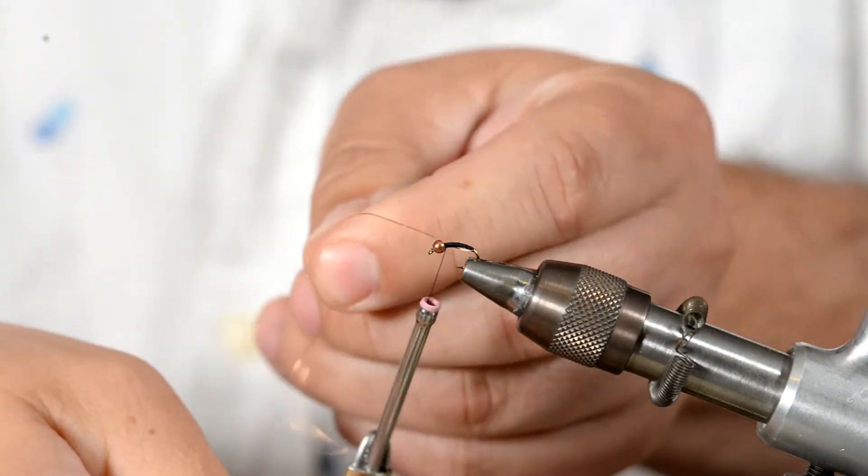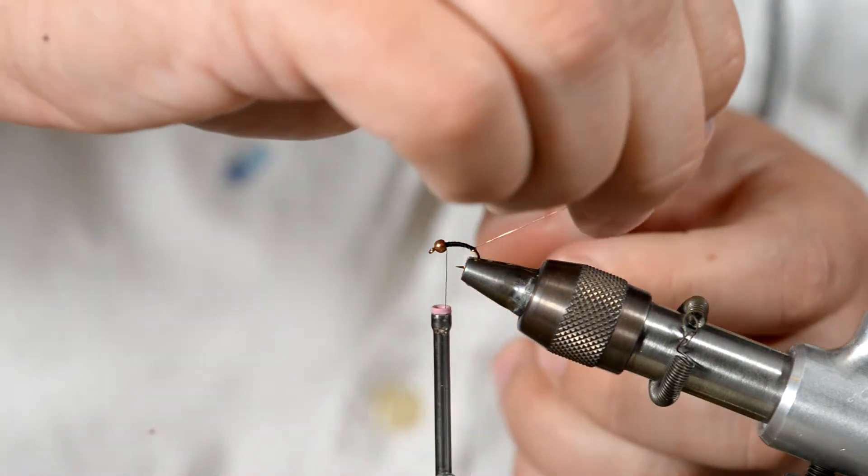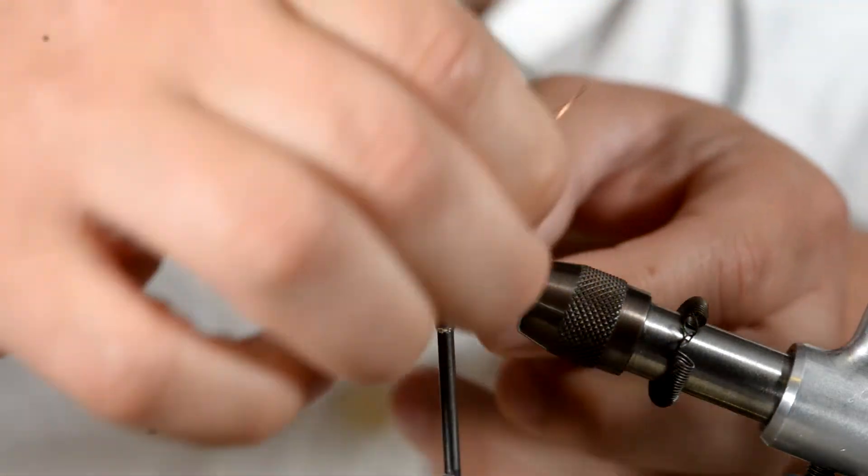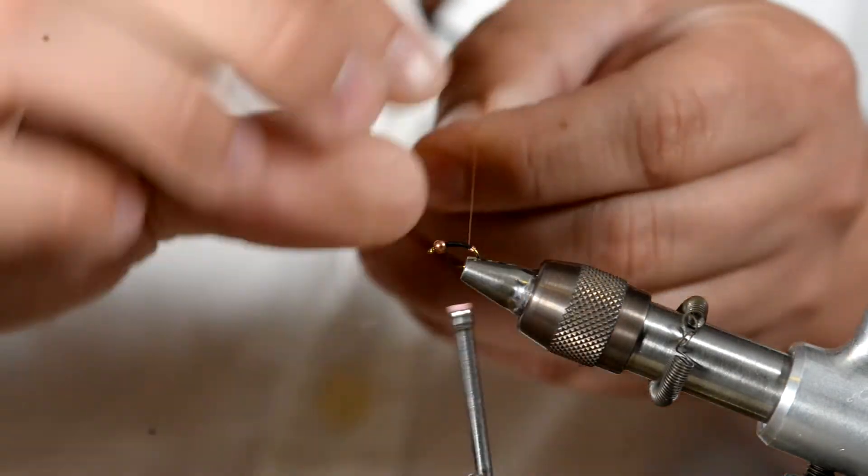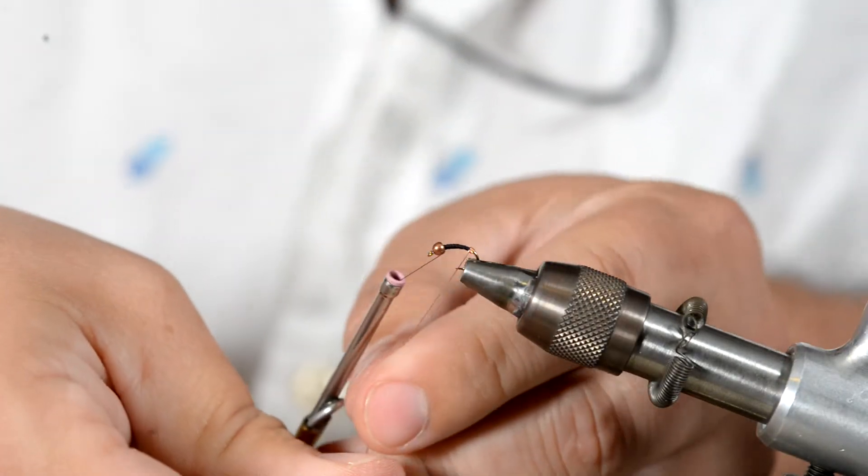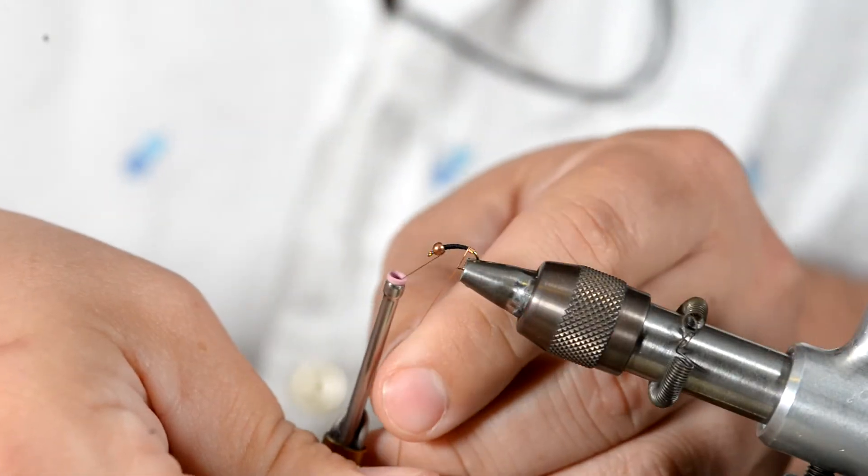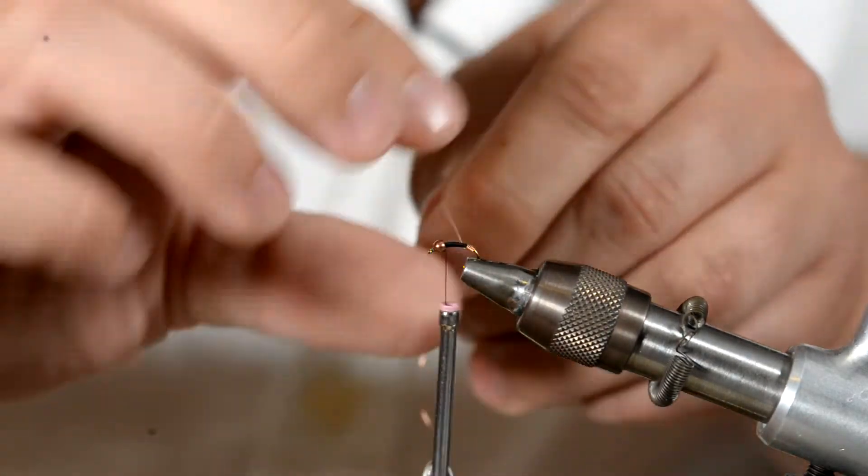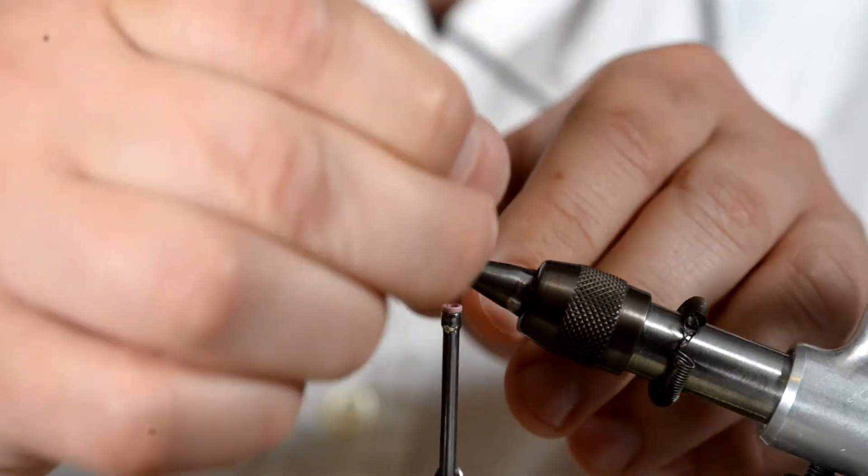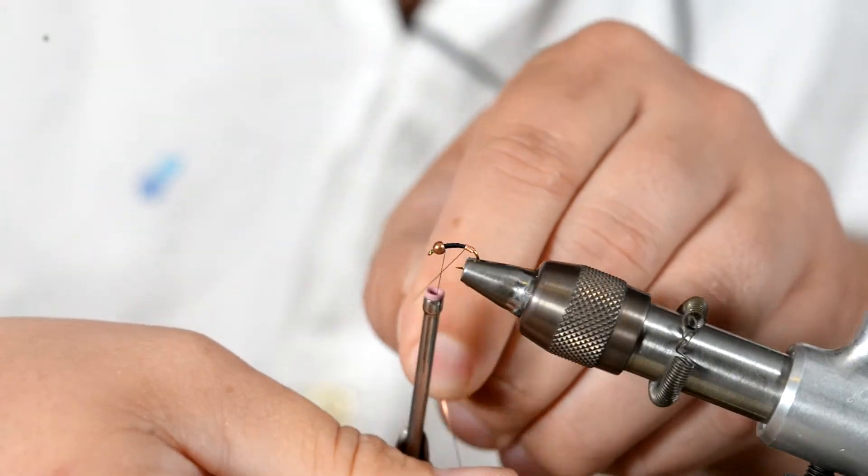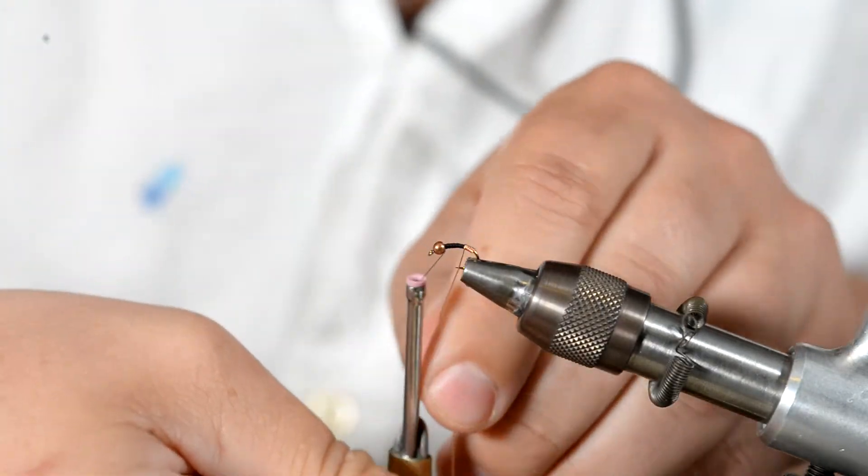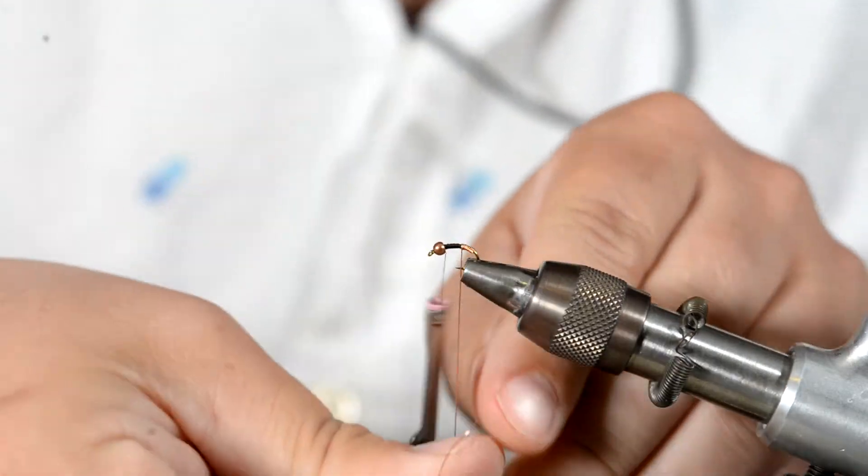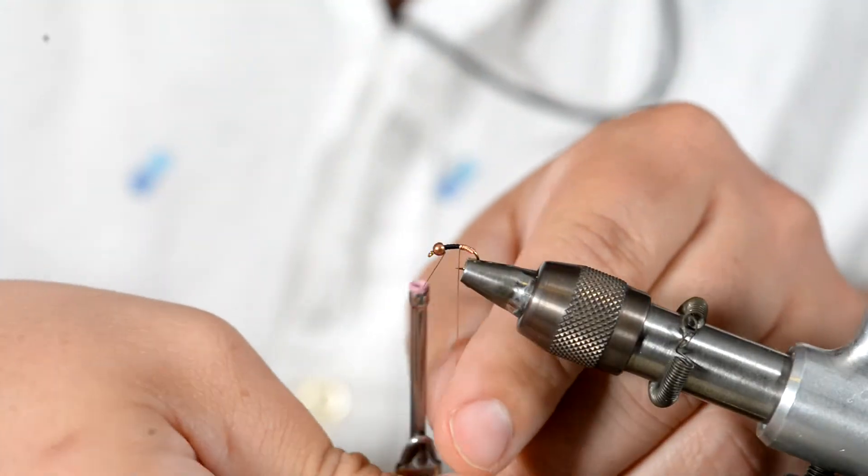Now when you start wrapping your wire, take care at the very beginning to make sure that your wire is laying nice and flat. Because we're gonna keep wrapping this wire all the way up the hook with touching thread wraps. Now this is gonna be one of those flies that's gonna be hard to get absolutely perfect with your wire wraps. So don't stress on it too much. Just get them closely touching as possible. And if you can get them completely touching as you advance your wire forward, even better.